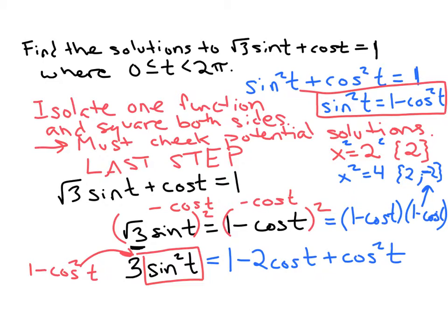So now we have 3 times sin²t, which is—we're replacing that with (1 - cos²t), equals 1 - 2cos(t) + cos²t.